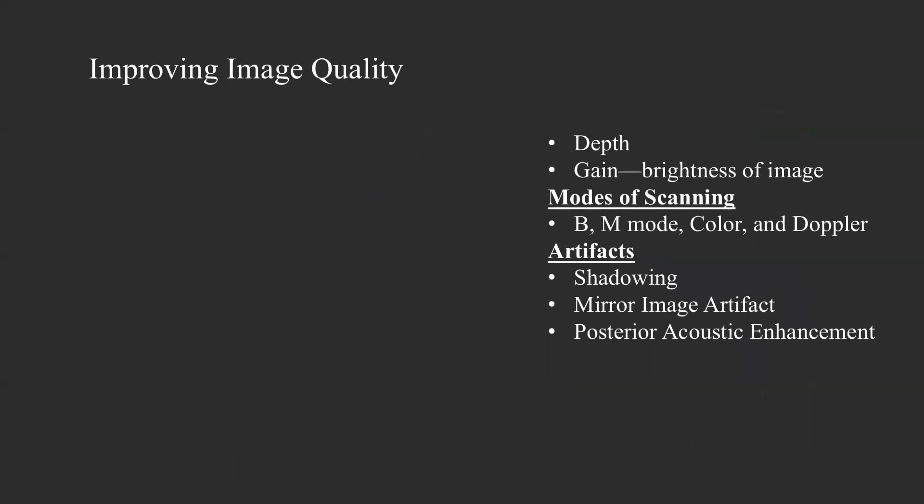To improve image quality, first adjust the depth to focus on specific areas, and adjust gain for better brightness. There are also different scanning modes: B-mode, M-mode (motion mode), color, and Doppler. Additionally, there are different artifacts useful for diagnostic purposes — shadowing, mirror, magic artifact, and posterior acoustic enhancement. These artifacts help diagnose abnormalities, and adjustments can be made to improve the image. We'll cover these in later episodes.